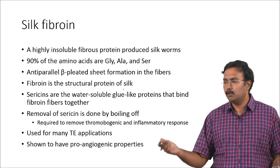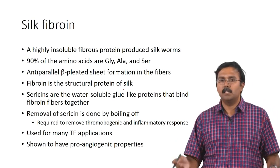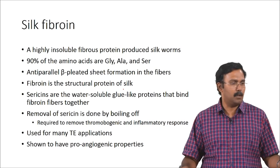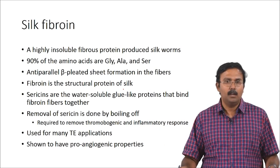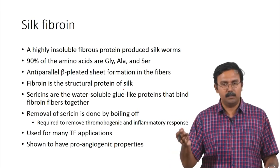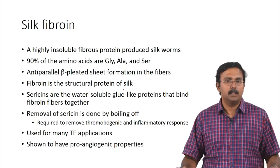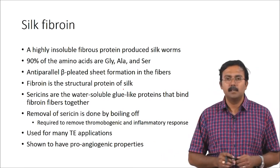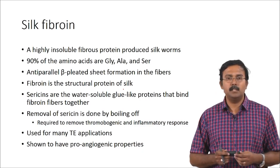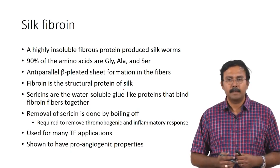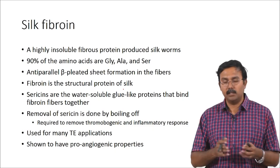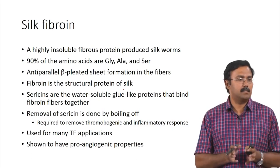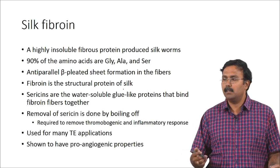Sericin is usually removed before you use fibroin for tissue engineering applications because sericin can cause thrombogenic and inflammatory responses. Removing it is quite simple because sericin is water soluble and fibroin is not — all you do is put it in water and boil it. Sericin will get dissolved and fibroin will remain. Silk fibroin has been used for many tissue engineering applications again in combination with other materials. Recently, within the last few years, it has been shown to have proangiogenic properties and they have actually established the mechanism through which silk fibroin can provide these properties, which really widens the horizon for this material.